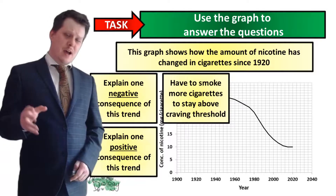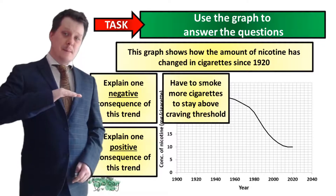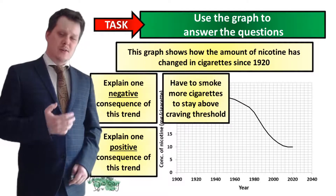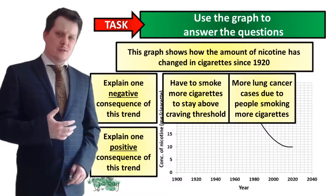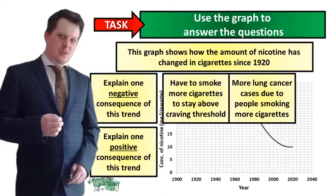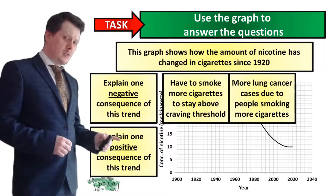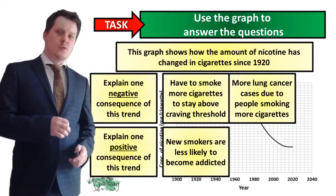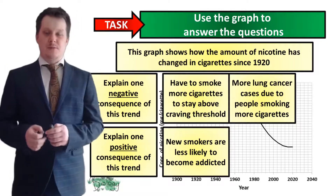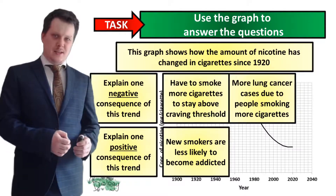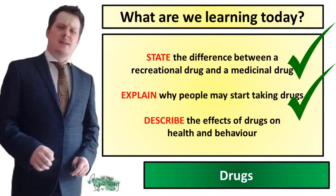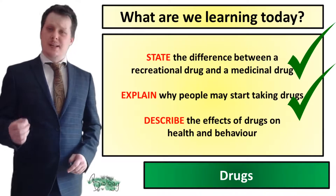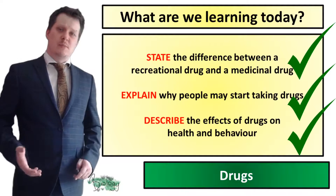Relating back to the other graph, you'd have to smoke more cigarettes to stay above the craving threshold. Because of this, people will have more lung disease and lung cancers since they're smoking more cigarettes. A positive consequence — not for people already smoking, but for a new smoker — is that they are less likely to become addicted because there's not as much nicotine in the cigarette. So now we've looked at the effects of drugs on health and behaviour, specifically addiction and withdrawal, using smoking as an example.